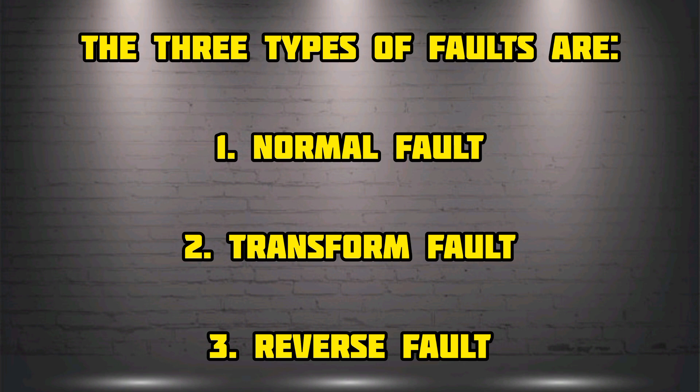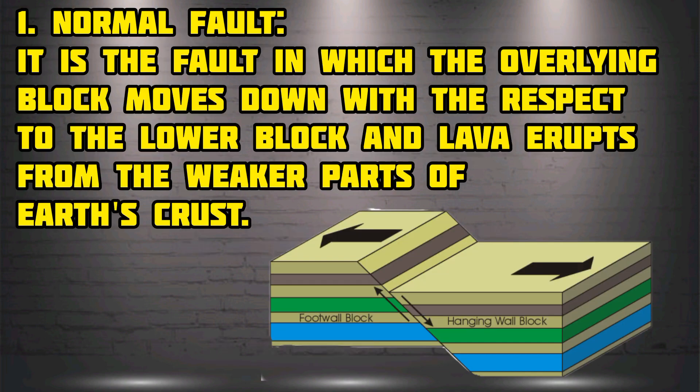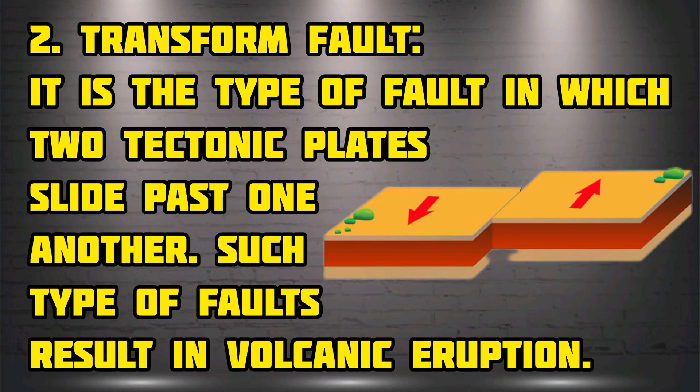Normal fault: it is the fault in which the overlying block moves down with respect to the lower block, and lava erupts from the weaker parts of the Earth's crust.